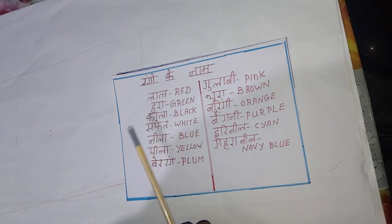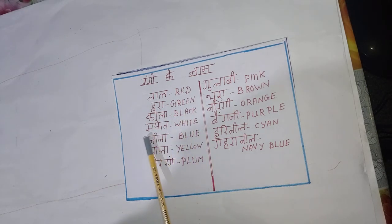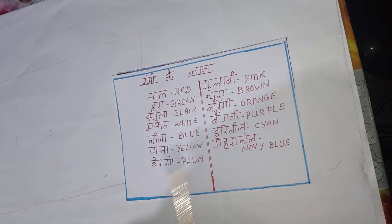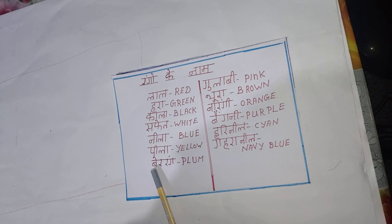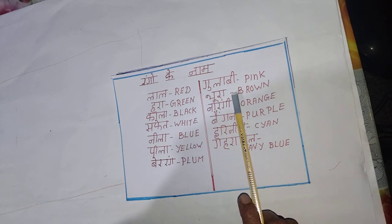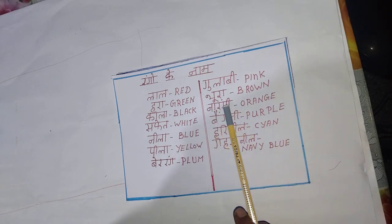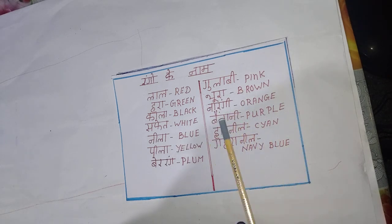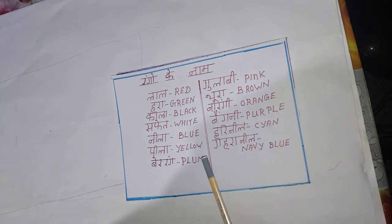Lal means red color. Hara means green color. Kala means black color. Saphed means white color. Neela means blue color. Peela means yellow color. Bairang means plum color. Gulab means pink color. Bura, brown color. Narengi, orange color. Baingani, purple color. Hari nil — shian. Gahra nil — navy blue.